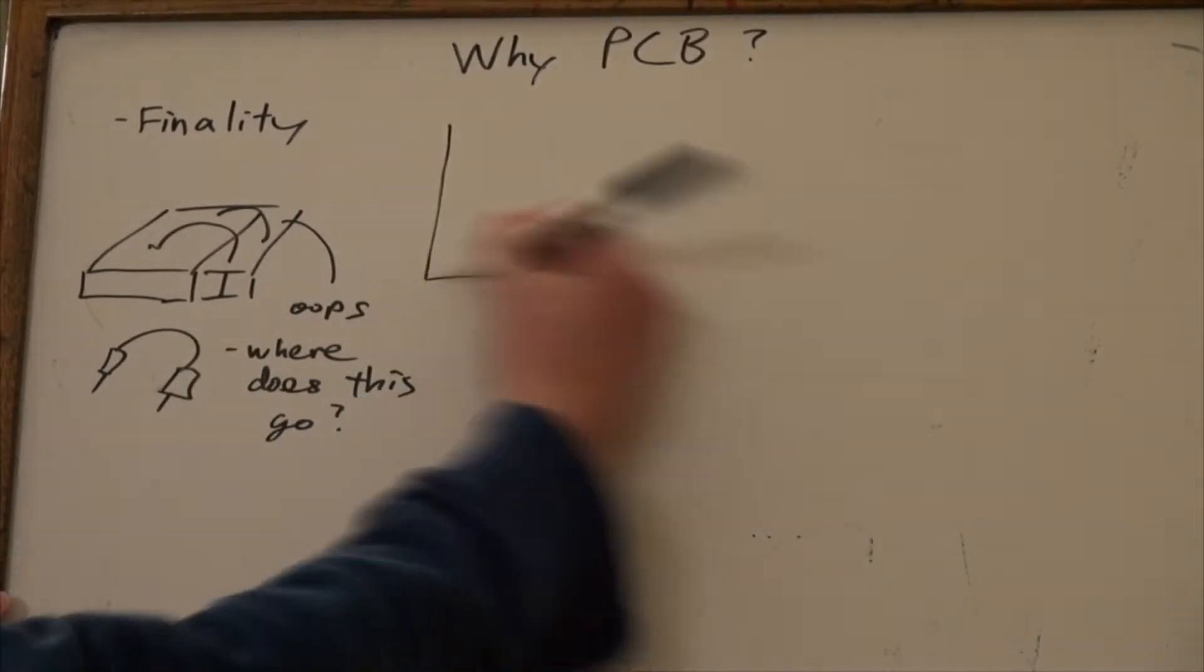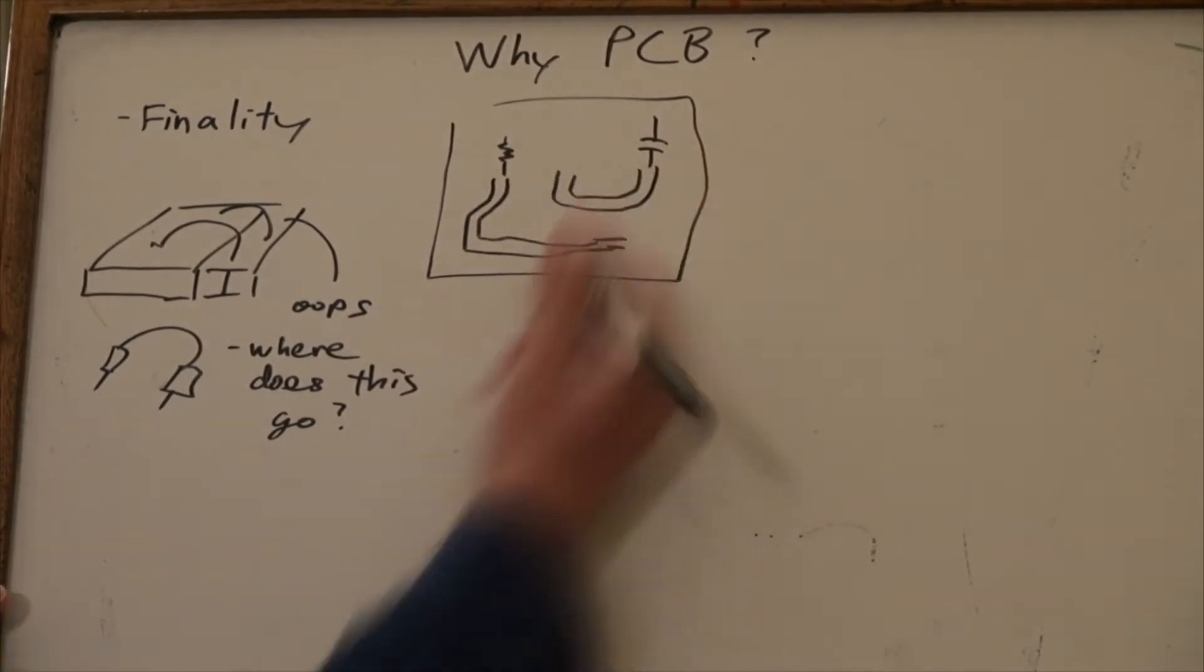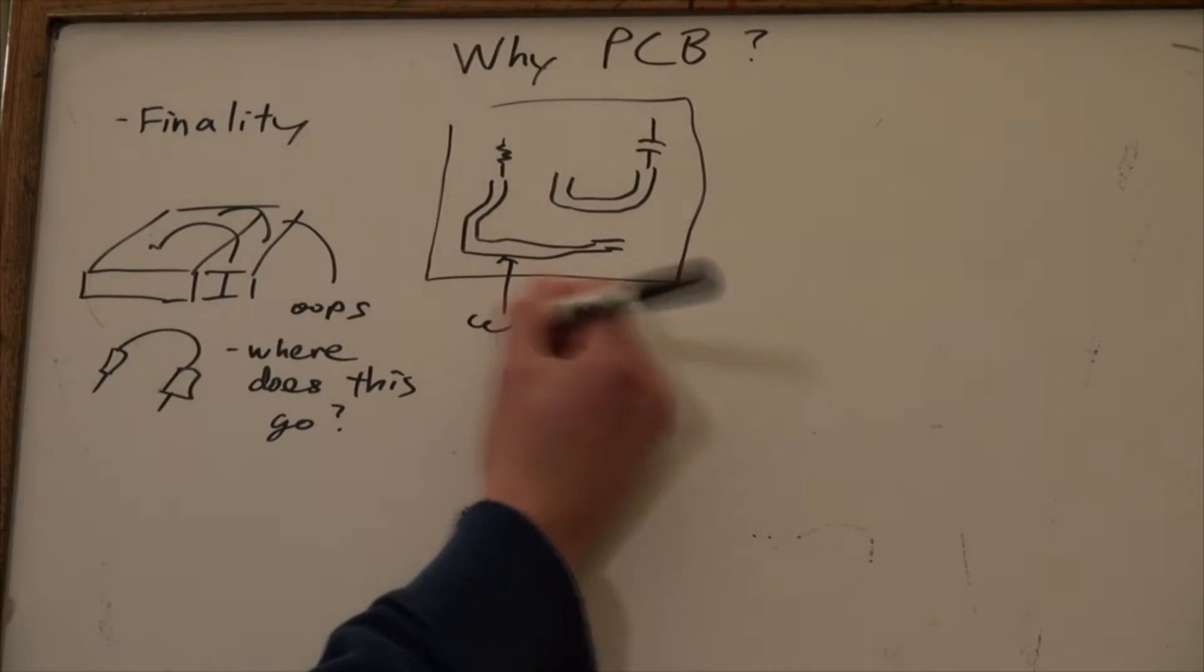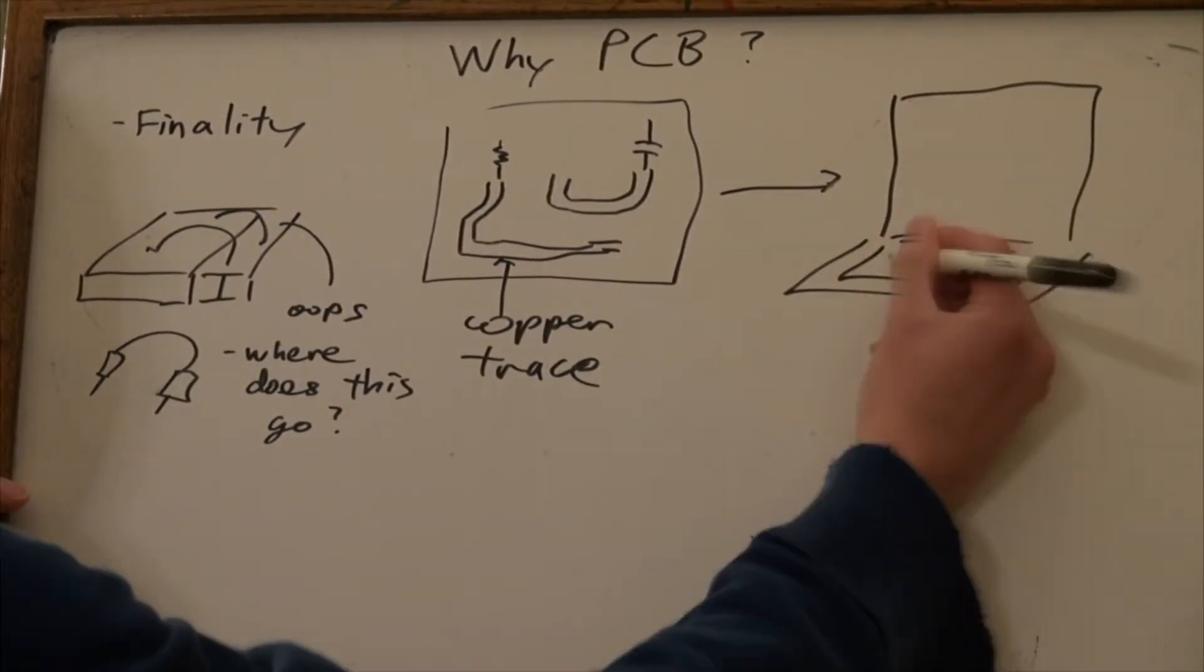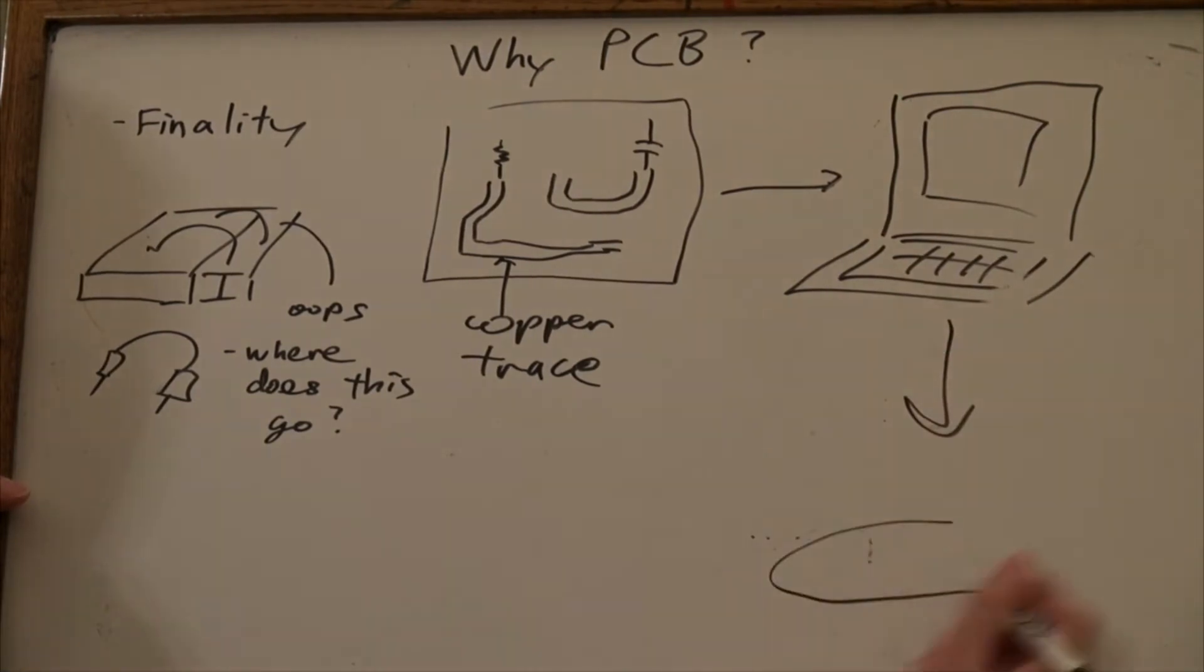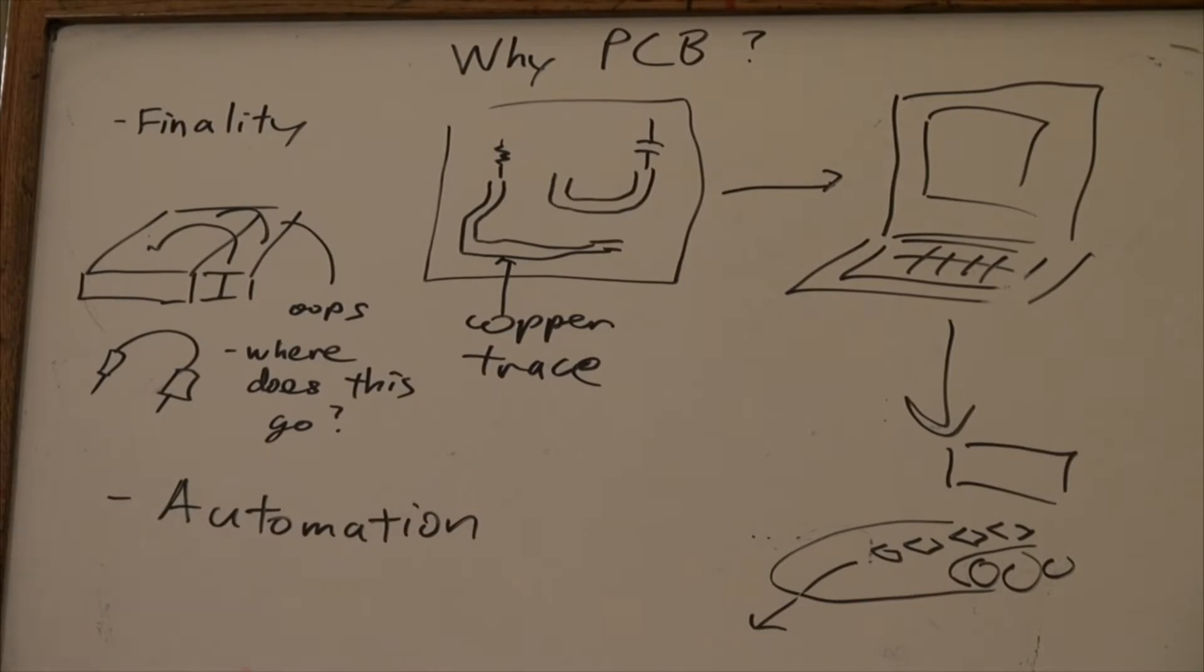PCBs give a sense of finality to the circuit. A machine prints out copper traces to connect the components together, so it becomes much more difficult for the circuit to randomly fail. Since most of the work is fed through a computer, this gives us the ability to automate some of that work, making it desirable in a company setting, as then it can be cheaply made, automated, and quick to make.